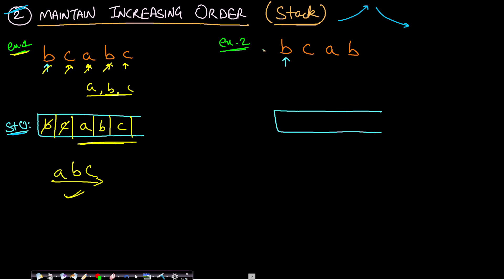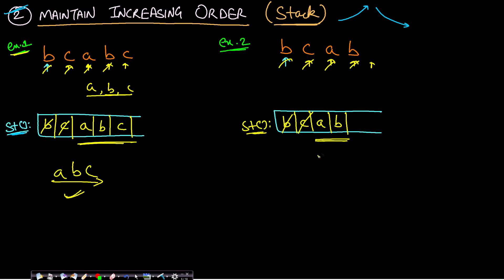Now let's try Example 2: 'bcab'. Push B (stack empty), then push C (larger than B). When we see A, we pop C then pop B, push A, then push B. After processing the entire string we get A, B in the stack. But the unique letters are A, B, C, so the answer must contain all three. The correct answer is B, C, A — so this is a wrong answer.